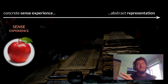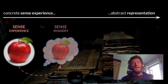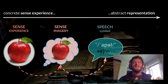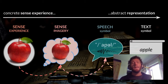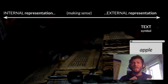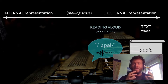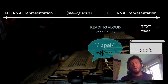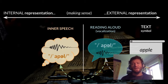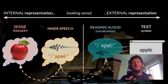So what we have is a concrete sense experience on the one hand, and that's becoming sense imagery connected to the meaning in our mind. We represent that with a speech sound — in this case 'apple' — and that speech sound is represented by the text A-P-P-L-E. What I really want to drive home is that the text symbol is really a representation of the vocalization or of the sound 'apple.' It's not directly representing an apple; it's representing the sound 'apple,' and then we use the sound 'apple' to access the actual sense imagery of an apple.